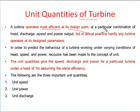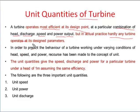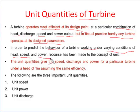A turbine operates most efficiently at its design point at a particular combination of head, discharge, speed, and power output. But in actual practice, hardly any turbine operates at its design parameters. In order to predict the behavior of a turbine working under varying conditions of head, speed, and power, recourse has been made to the concept of unit quantities.